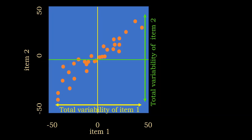How do we find the first principal component? The first principal component is very similar to regression, but there is a slight difference. We obtain a line that reduces the distance between the orange dots and that line. Any line proposed as a principal component has to pass through the intersection of the mean of item one and the mean of item two. We can rotate that line and find the best one — the line that minimizes the total distance between the dots and the line.